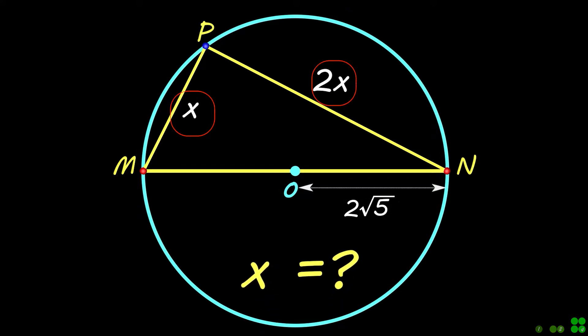Two side lengths of the triangle and the radius of the circle are given in centimeters. Find a value of X.